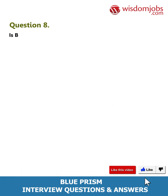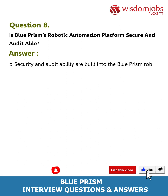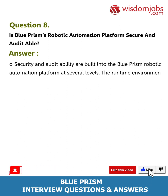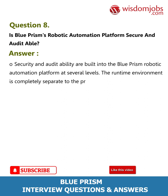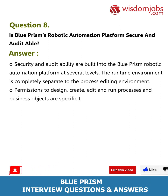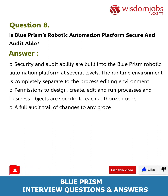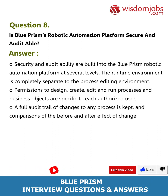Question 8: Is Blue Prism's robotic automation platform secure and auditable? Answer: All security and auditability are built into the Blue Prism robotic automation platform at several levels. The runtime environment is completely separate from the process editing environment. Permissions to design, create, edit, and run processes and business objects are specific to each authorized user. A full audit trail of changes to any process is kept, and comparisons of the before and after effect of changes are provided.